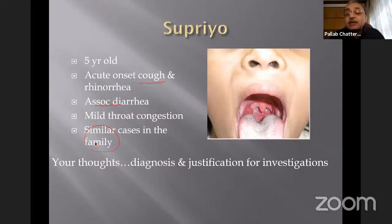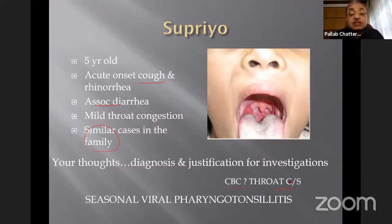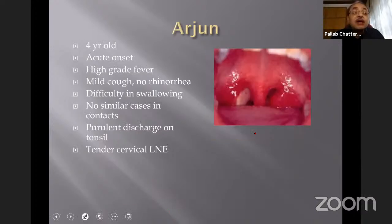If there is a history of contact in the family or surroundings and two systems are involved, it is probably a viral infection. Do we need investigations — blood count, throat swab? Usually no, because this is typically a seasonal viral pharyngotonsillitis. It does not need any investigation. You can see the redness and the furry tongue — these are very important signs in a viral pharyngotonsillitis.